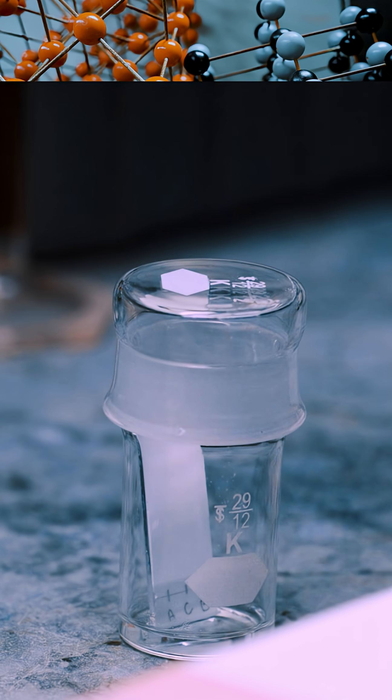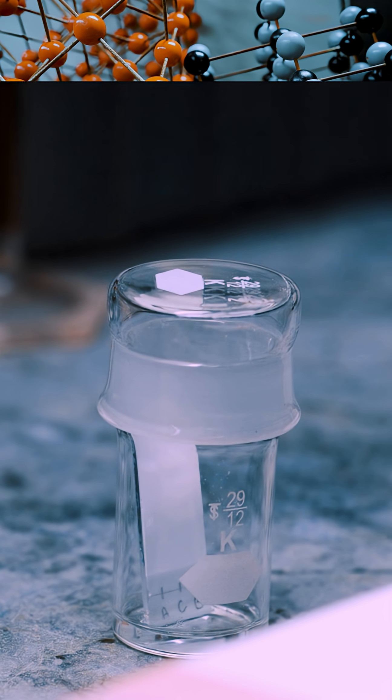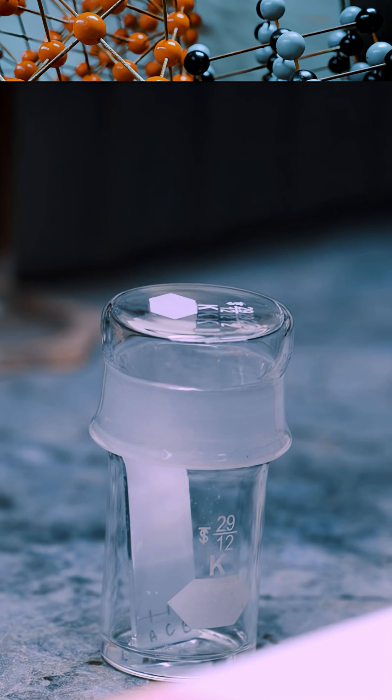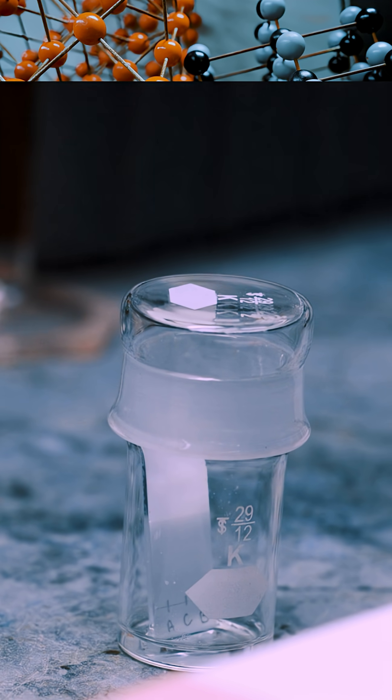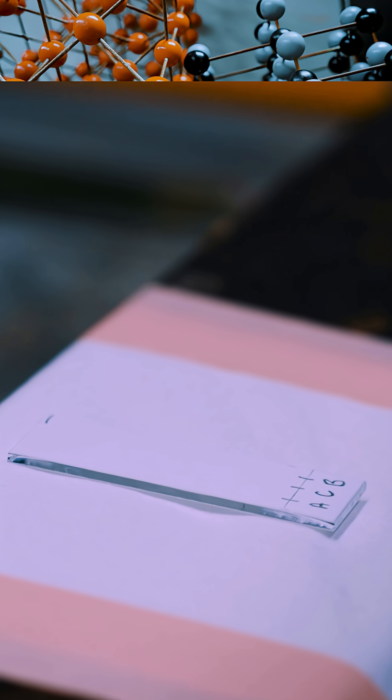The chemicals that we've added here are basically sticking to this and we call that the stationary phase. Those molecules have a choice. They can stay on that stationary phase and they will stay on it. But the solvent, which we call the mobile phase, will start moving up this plate and then the chemicals will move with it.